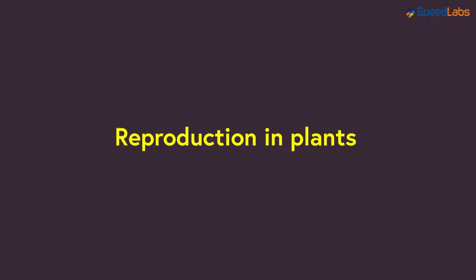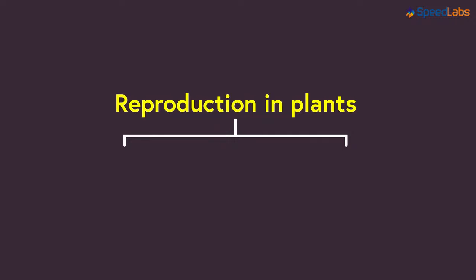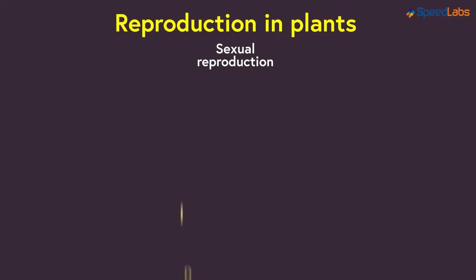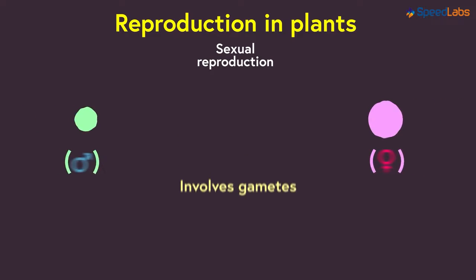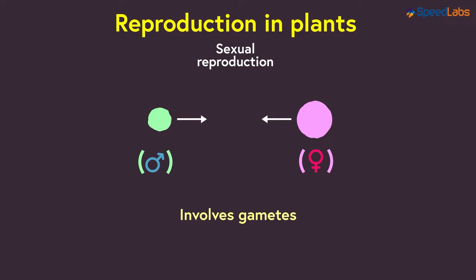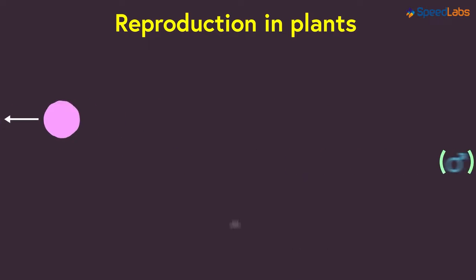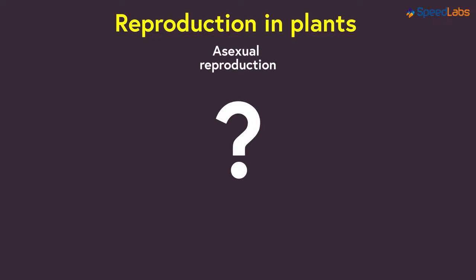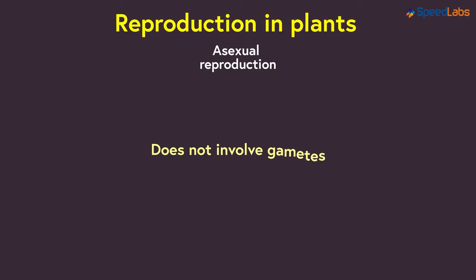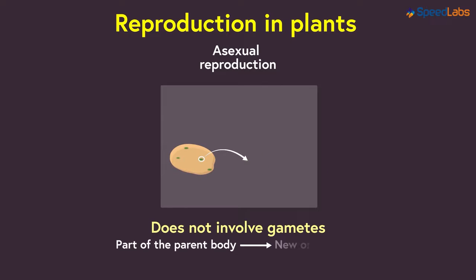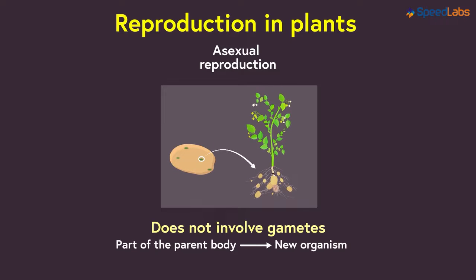Reproduction in plants can occur in two major ways. One type is asexual reproduction and the second is sexual reproduction. Sexual reproduction involves sex cells or gametes, so a new individual is born when gametes from both male and female parents fuse. In contrast, asexual reproduction does not involve gametes — it is a type in which some part of the parent body is capable of growing into a new organism.